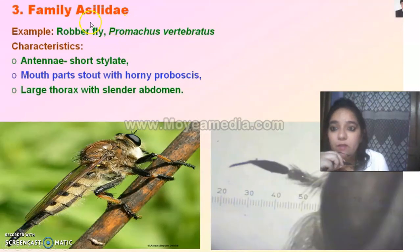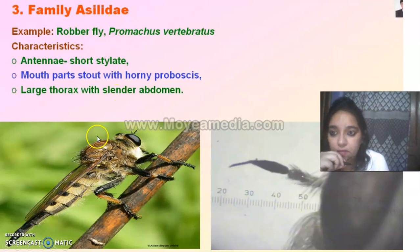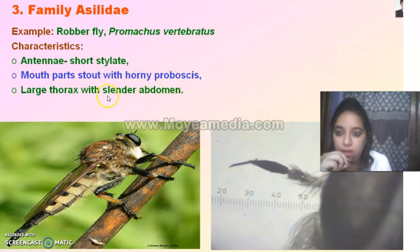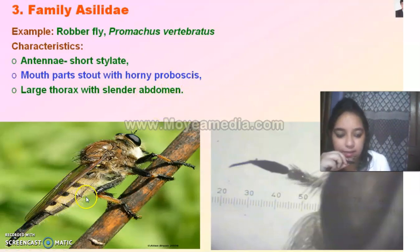Then we come to Asilidae — the robber fly. This is the antenna — it is short and stylate. The mouthparts are a horny proboscis, short and stiff. The body is very slender.